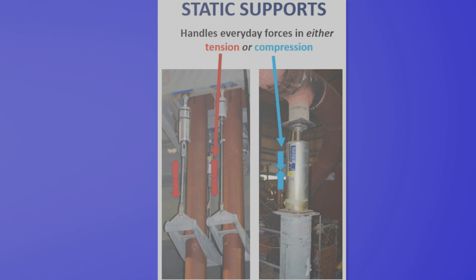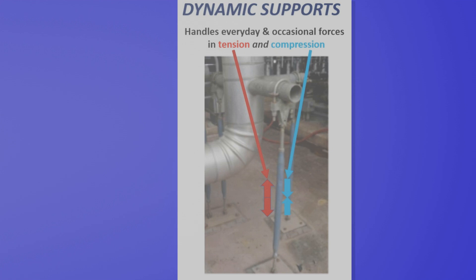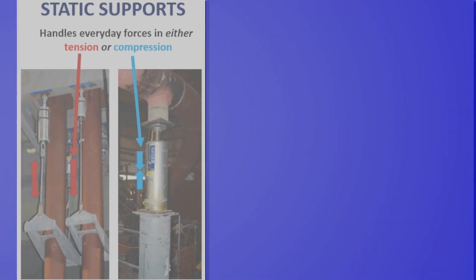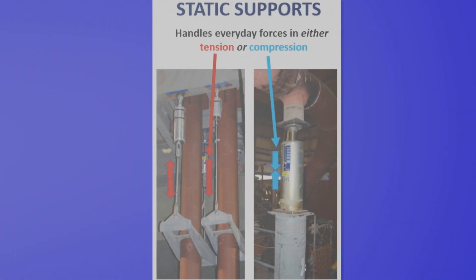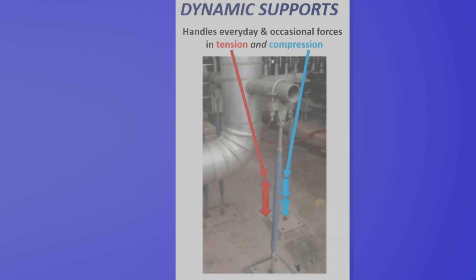The two general categories of pipe supports are static supports and dynamic supports. The main difference is that static supports are designed to handle everyday forces in either tension or compression, but not both. While dynamic supports are designed to handle the everyday forces without issue, but also handle much stronger occasional forces where the support could be in either tension or compression, depending on what is happening with the pipeline.